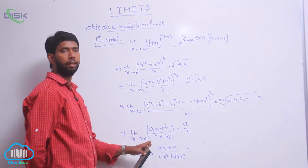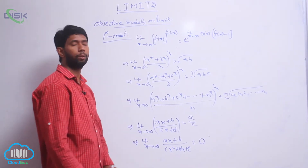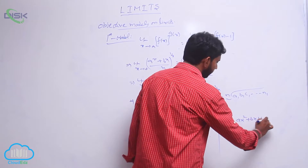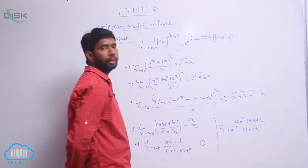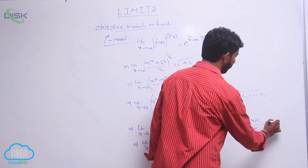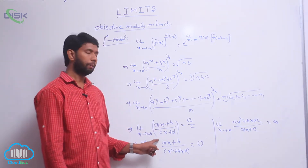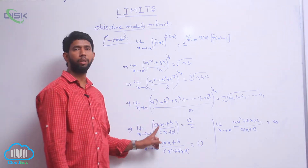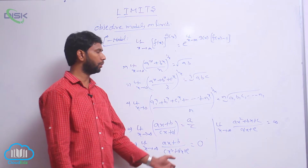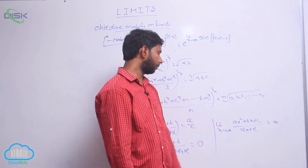If limit extends to infinity of (ax + b)/(cx² + dx + e), the degree of the numerator (1) is less than the degree of the denominator (2), so its value equals 0. Similarly, if degree of numerator is greater than degree of denominator, the value equals infinity. Summary: equal degrees → coefficients ratio; numerator degree less → 0; numerator degree greater → infinity.